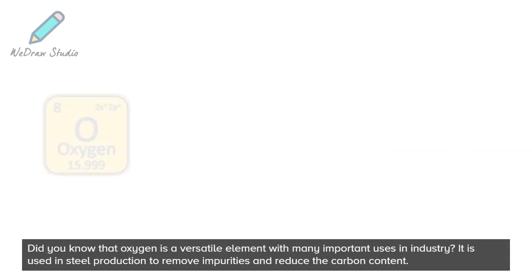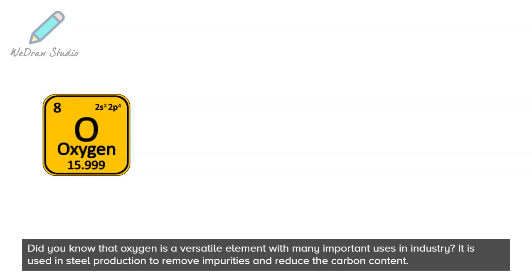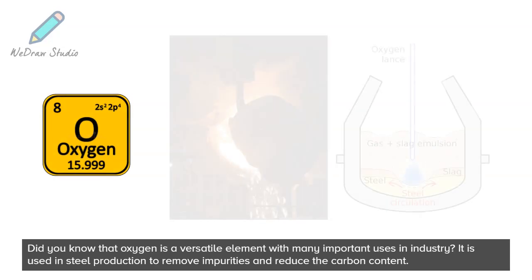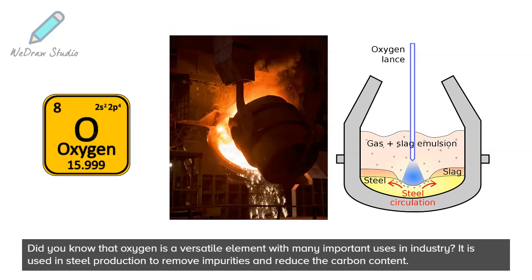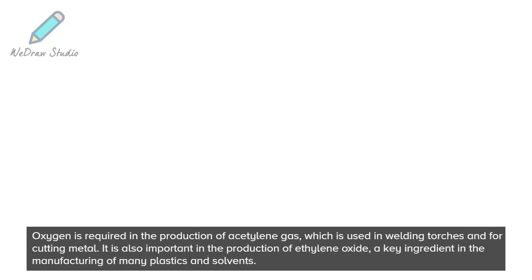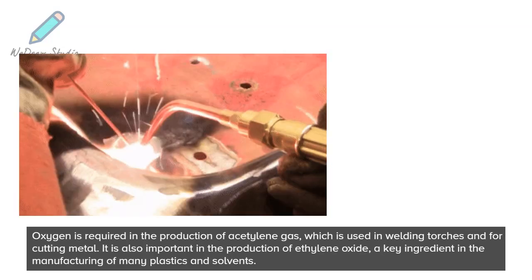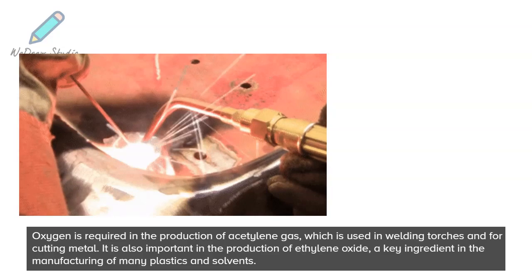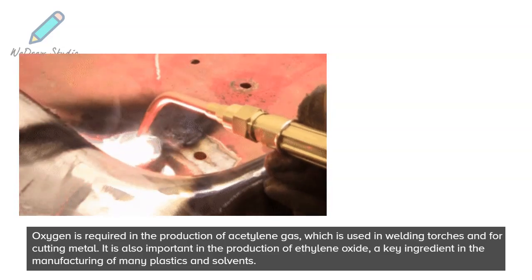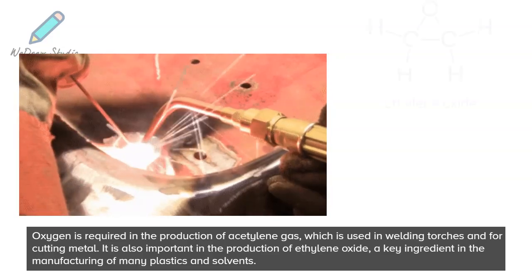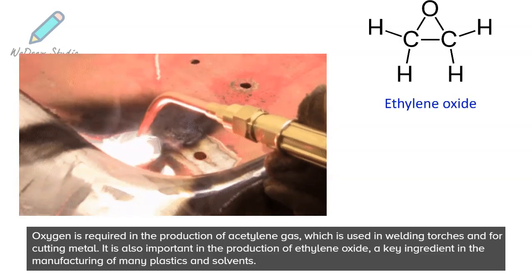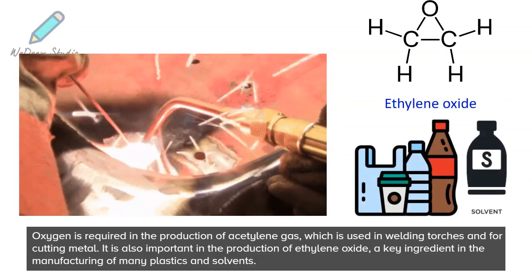Did you know that oxygen is a versatile element with many important uses in industry? It is used in steel production to remove impurities and reduce the carbon content. Oxygen is required in the production of acetylene gas, which is used in welding torches and for cutting metal. It is also important in the production of ethylene oxide, a key ingredient in the manufacturing of many plastics and solvents.